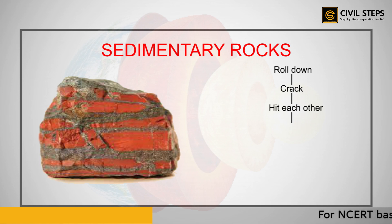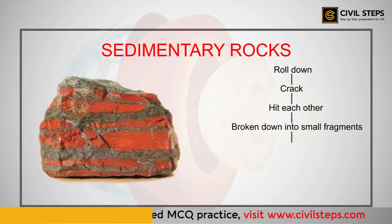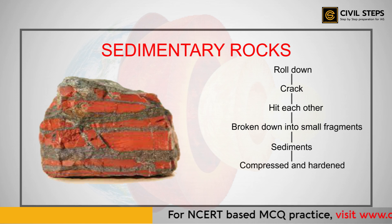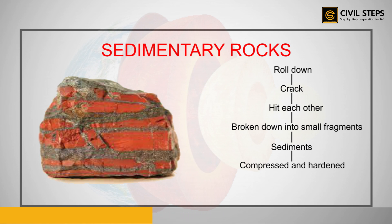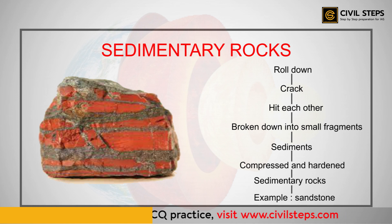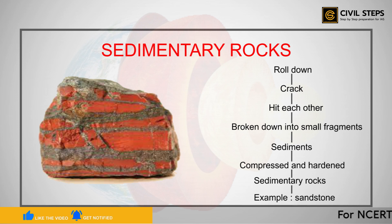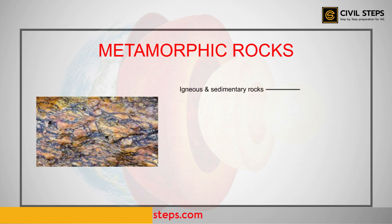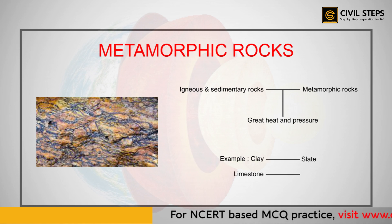Rocks that roll down, crack, and hit each other are broken down into small fragments called sediments. When these sediments are transported and deposited by wind, water, etc., the loose sediments are compressed and hardened to form layers of rock — these are called sedimentary rocks. For example, sandstone is made from grains of sand. These rocks may also contain fossils of plants, animals, and other microorganisms. Igneous and sedimentary rocks can change into metamorphic rocks under great heat and pressure — for example, clay changes into slate, and limestone changes into marble.